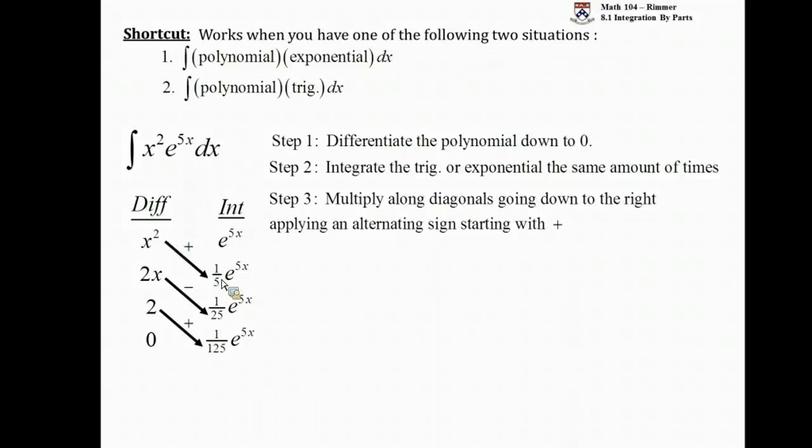So once I multiply x squared by one fifth e to 5x, I associate a plus sign with that. But when I multiply 2x by one over twenty-fifths e to the 5x, I apply a negative to that multiplication.